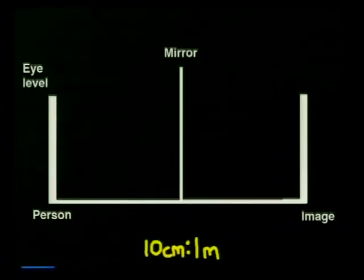Are you beginning to understand how the image you see in a mirror is formed? But what do we notice about the image we see? Is the image the same size as the object? To answer this question, we would have to draw a scale diagram. For this diagram, we'll use the scale 10 cm is equal to 1 m.